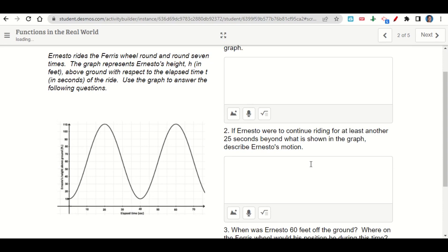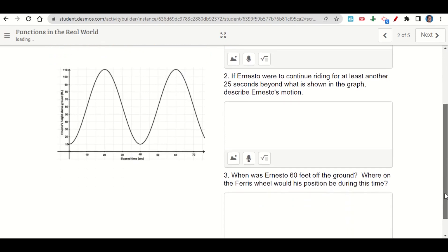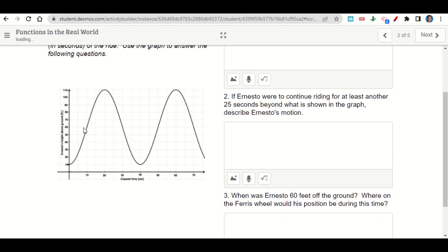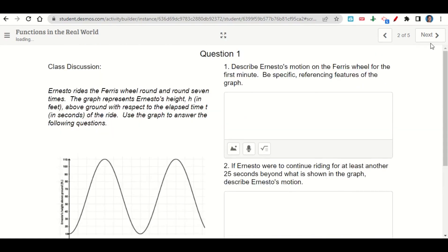It says if Ernesto were to continue riding for at least another 25 seconds, describe his motion. So what would happen in the next 25 seconds? Then when was Ernesto exactly 60 feet off the ground? Well, 60 feet, he's right here, right here, right here, and right here. So you'll state where that is in seconds. And then we'll click next.